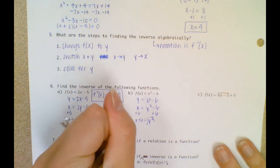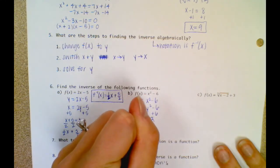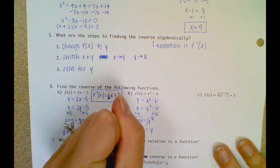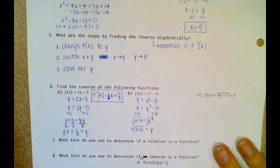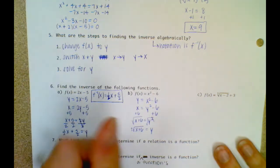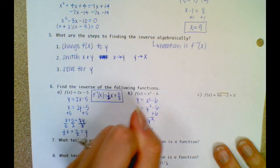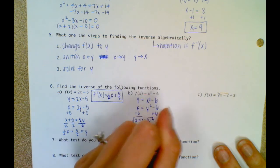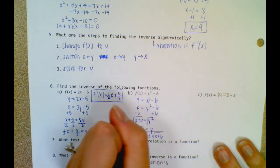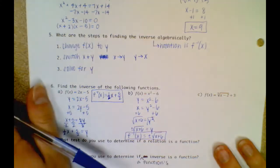To get rid of x squared, you square root it. So you get the square root of x plus 6 equals y. Remember, you get plus or minus out in front there, because when you take the square root of something you get plus or minus. Because we're good mathematicians, let's rewrite it using inverse notation.